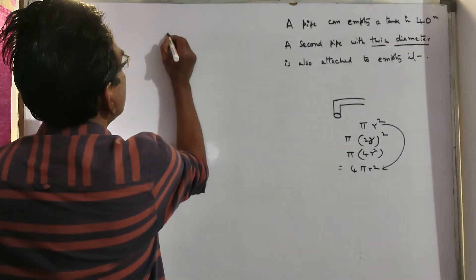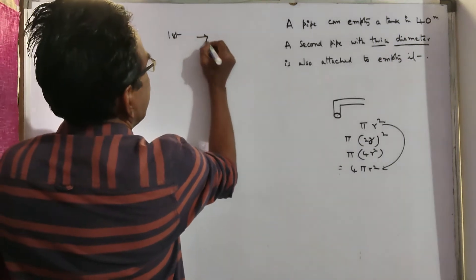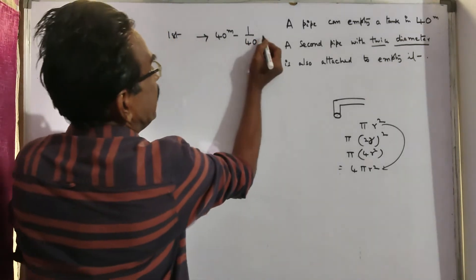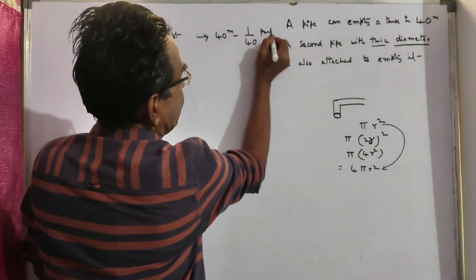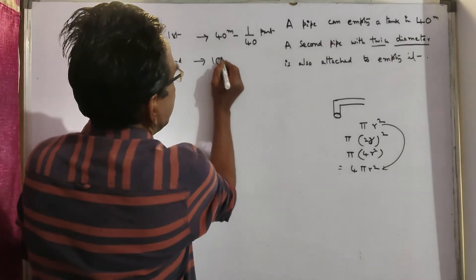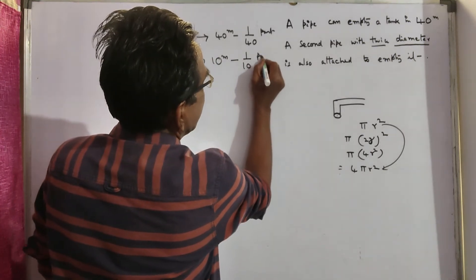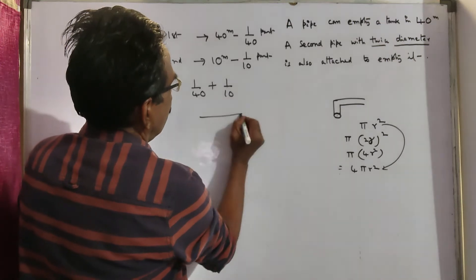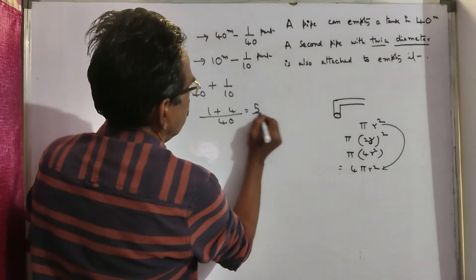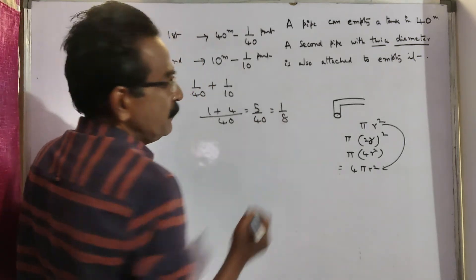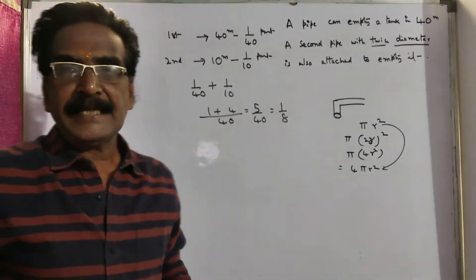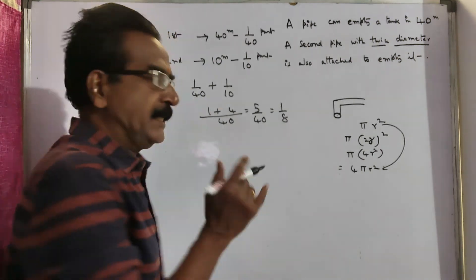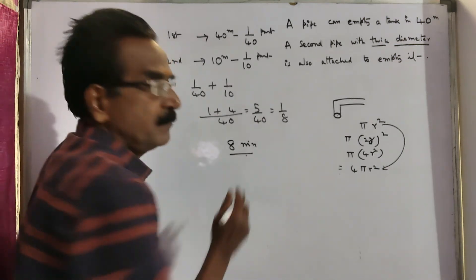The first pipe takes 40 minutes to empty the tank, so it empties 1/40 part per minute. The second pipe takes only 10 minutes, so it empties 1/10 part per minute. If both pipes are opened, together they empty 1/40 + 1/10 = 1/8 part per minute. So the tank is fully emptied in 8 minutes.